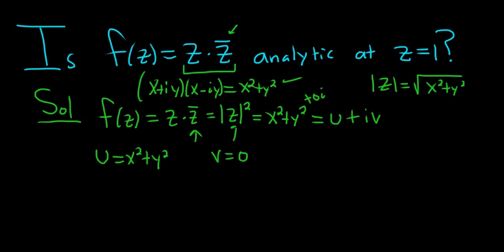So if it is analytic at 1, the Cauchy-Riemann equation should hold at 1. Let's go ahead and work out the Cauchy-Riemann equations. The Cauchy-Riemann equations say that u sub x is equal to v sub y. And u sub y is equal to negative v sub x.